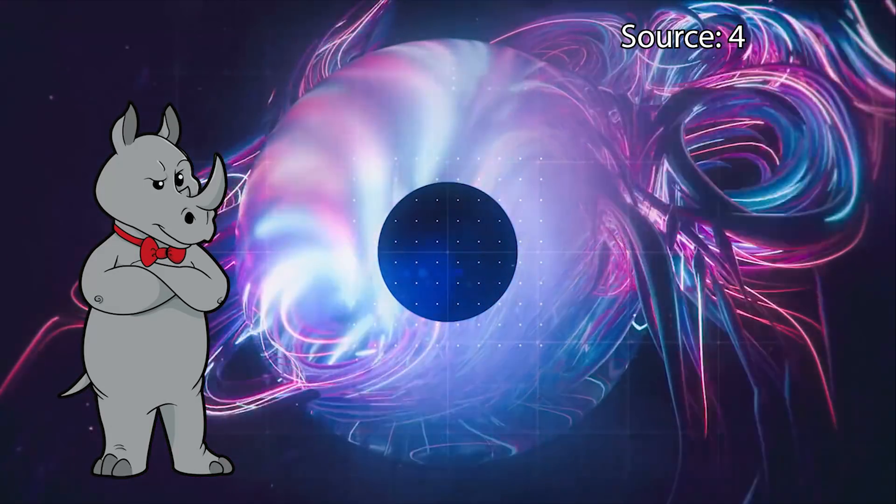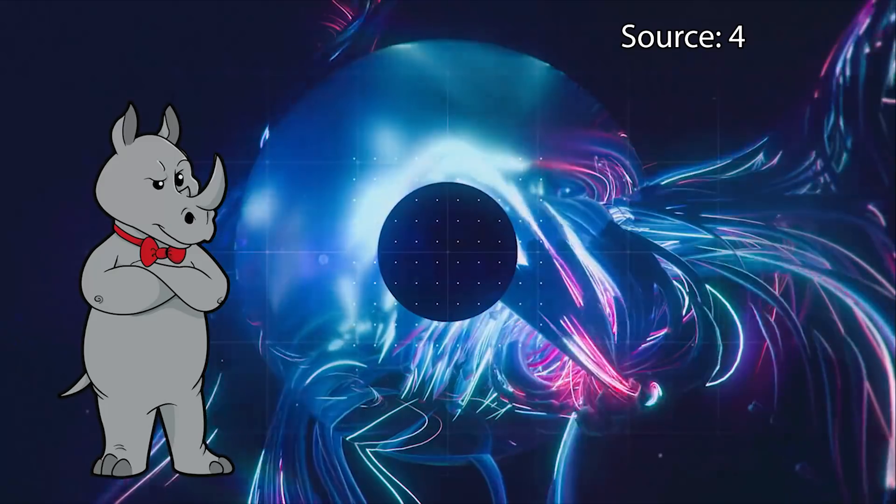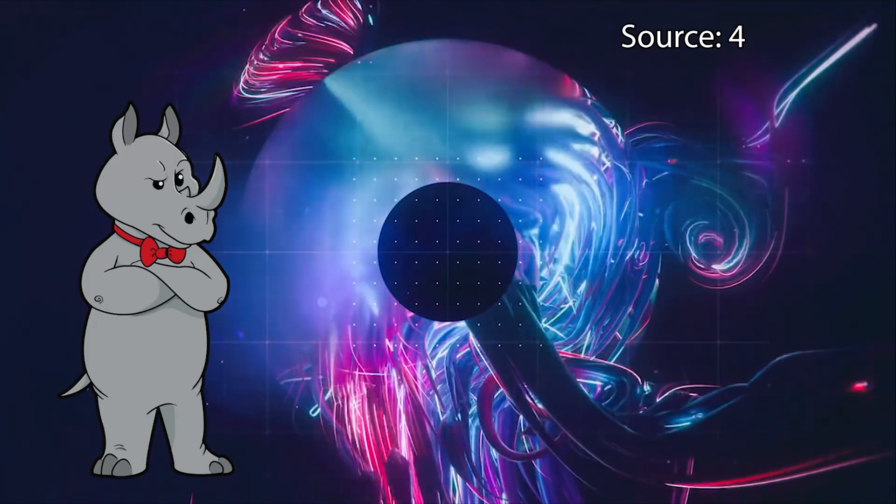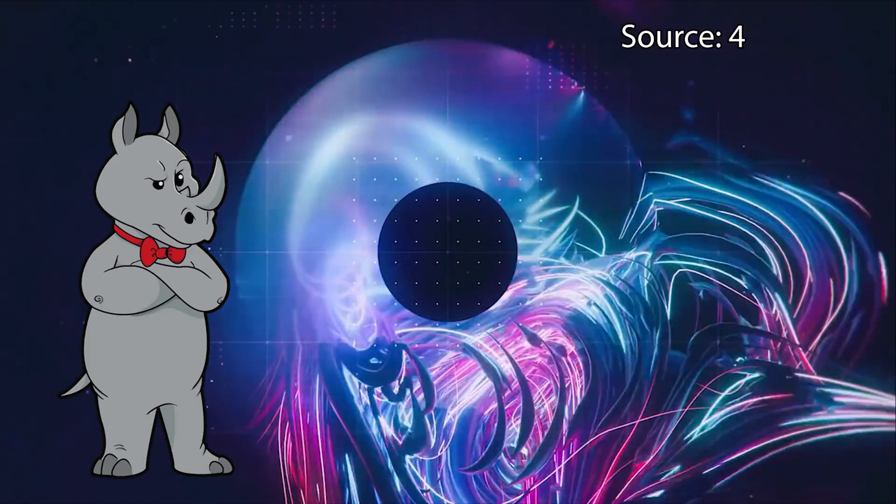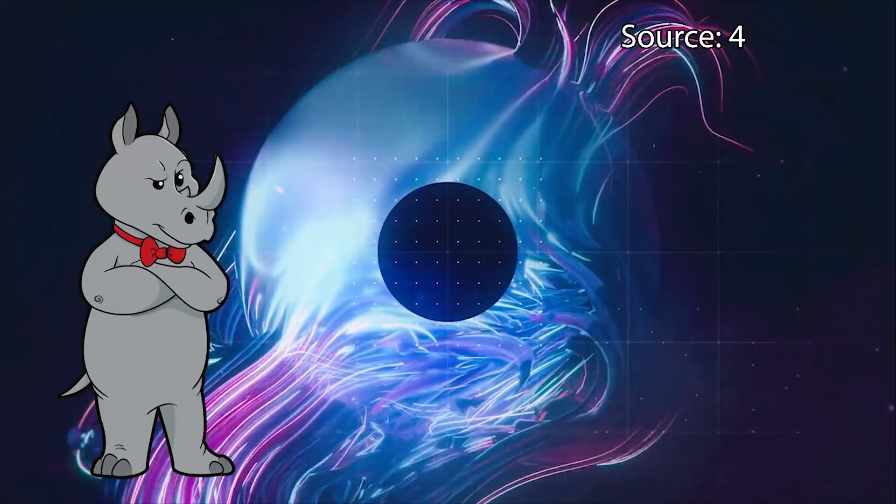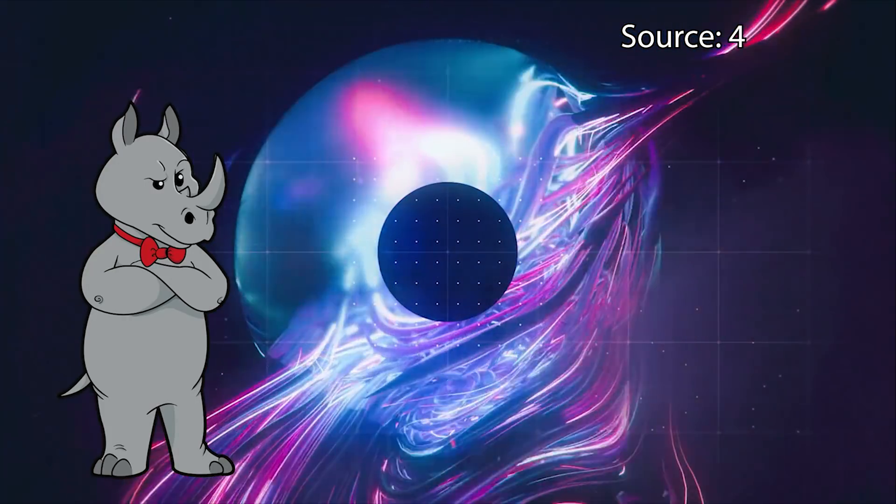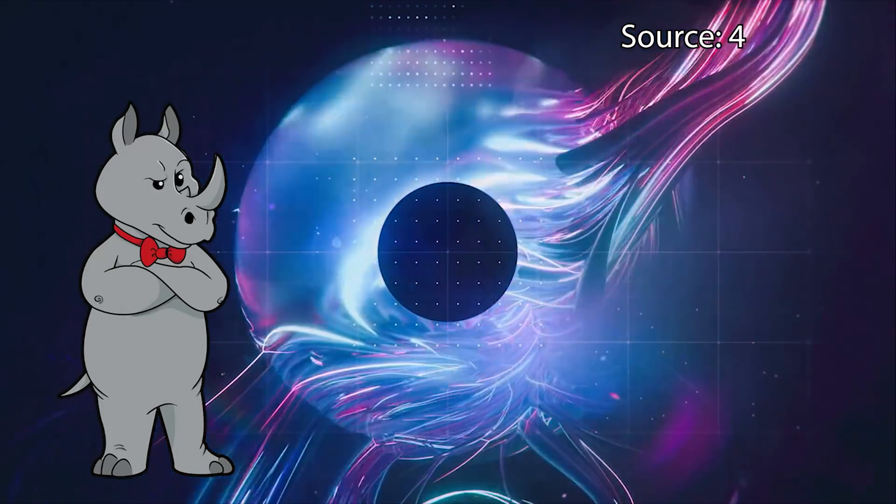The clade uniconta consists of organisms whose flagellated cells have one singular flagellum, but it would be entirely reasonable to think that it's possible that an organism which has multiple flagella could evolve in such a way as to lose all but one flagella, meaning that a biconta, an organism with two flagella, could potentially evolve into an organism that we would have no way of knowing just by looking at morphology does not belong in uniconta.